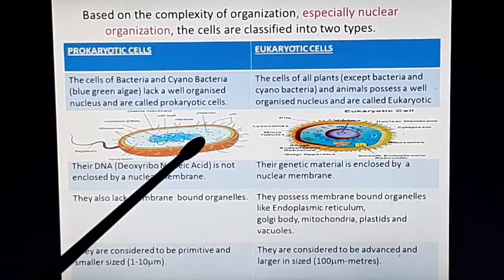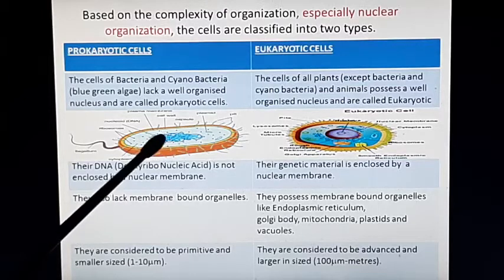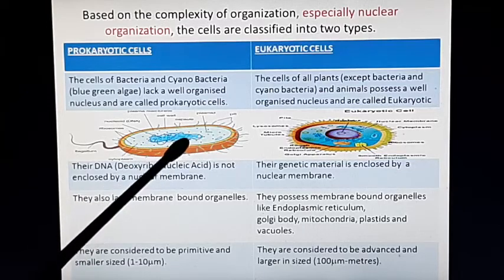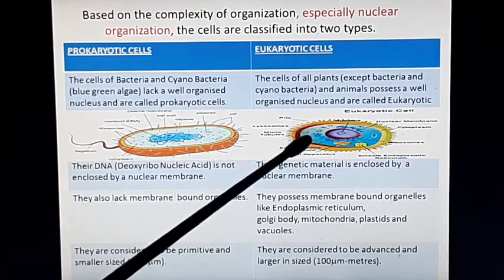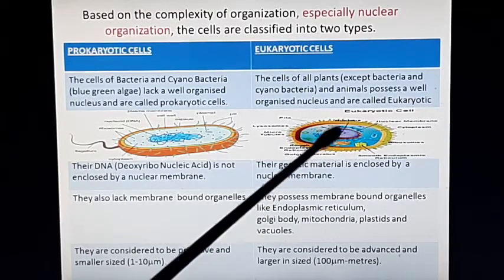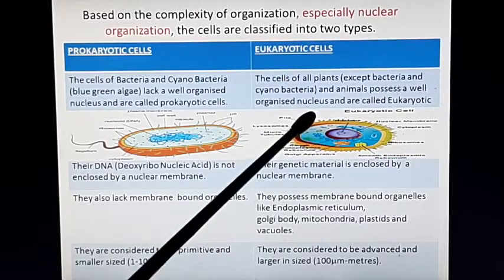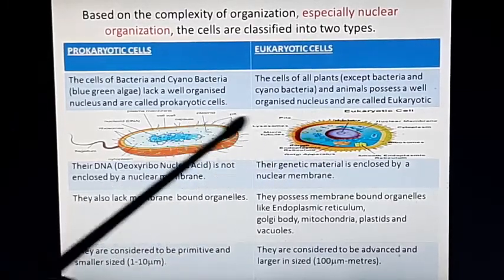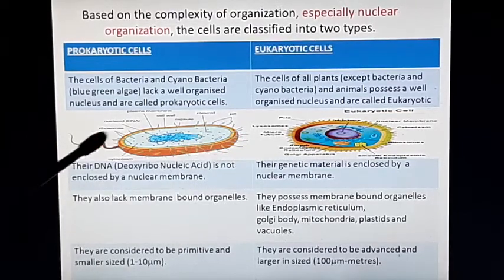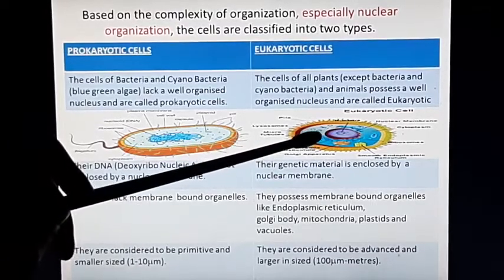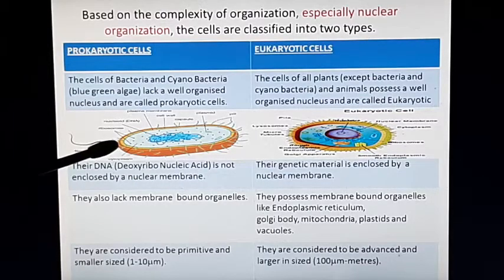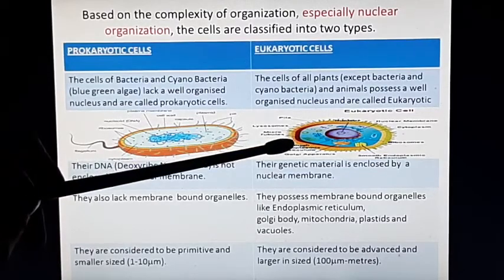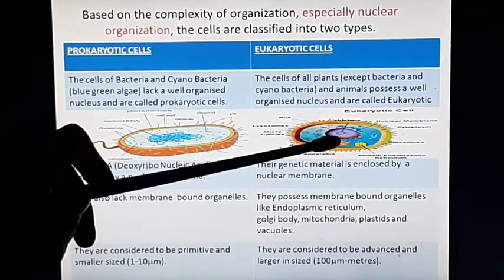In prokaryotic cells, you can see the center part is not well organized — it is only a thread-like structure. Cells that do not have a defined nuclear organization are called prokaryotic. Cells which have a well-organized nucleus are called eukaryotic. The diagrams shown here compare a bacterial cell (prokaryotic) with an animal cell showing perfect nuclear organization (eukaryotic).